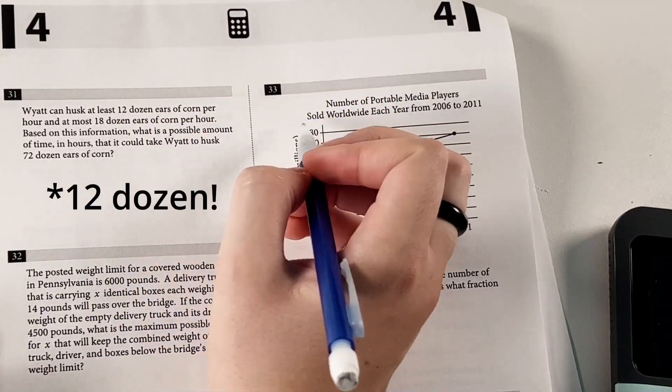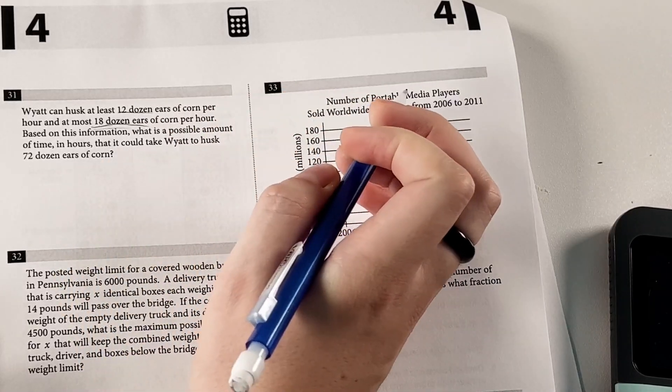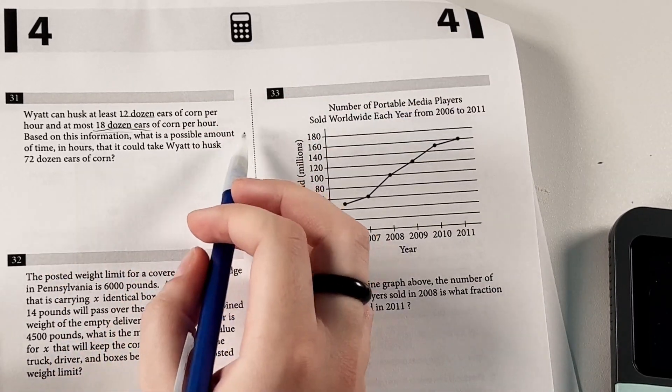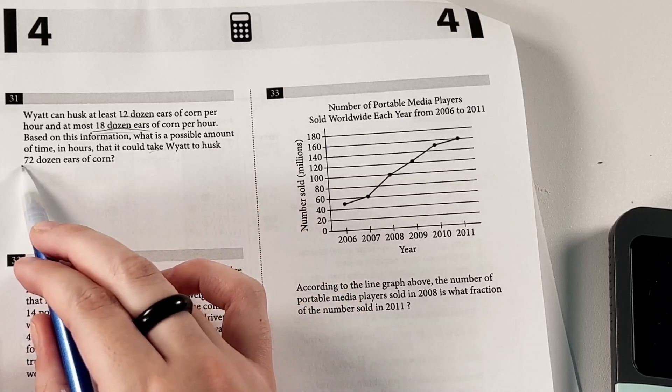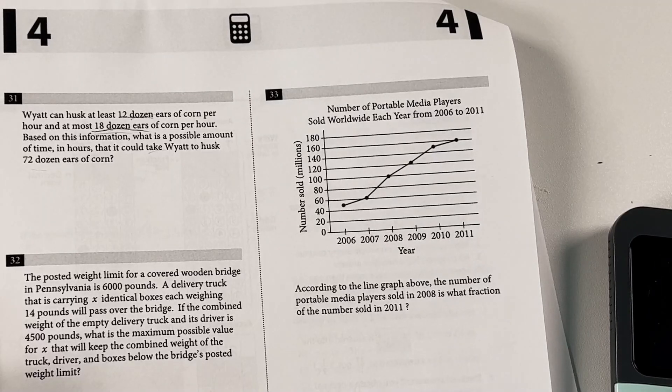So we have Wyatt can husk at least 12 dozen ears of corn per hour and at most 18 dozen ears of corn per hour. Based on this information, what is a possible amount of time in hours that it could take Wyatt to husk 72 dozen ears of corn? So we're all in the units of dozen here, so that should be fine to ignore.